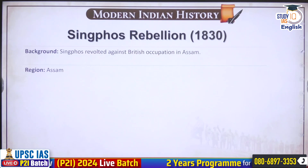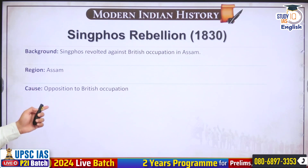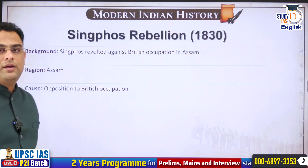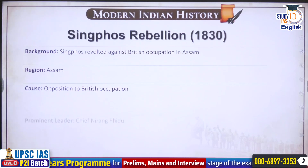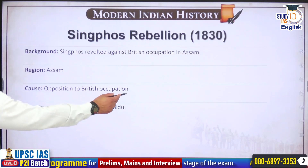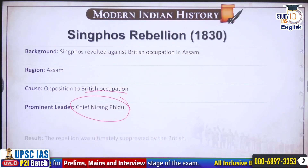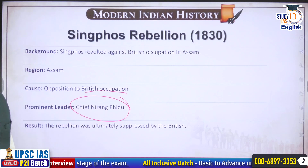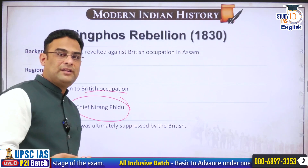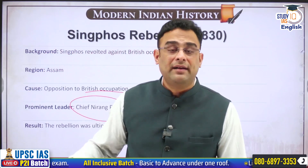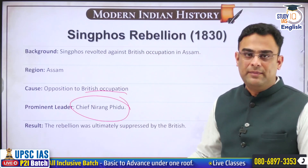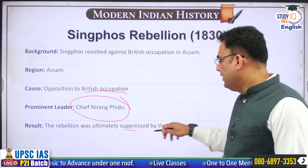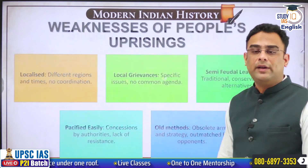One last revolt in this context is that of the Singpho. The context is again the same — Assam being taken over after defeating the Burmese. The Britishers had given an impression that they would not occupy Assam, but after defeating the Burmese they did occupy it, leading to great discontent among the tribes. Remember the name of Chief Nirang Fidu as the leader. Ultimately the Britishers managed to suppress this particular revolt.